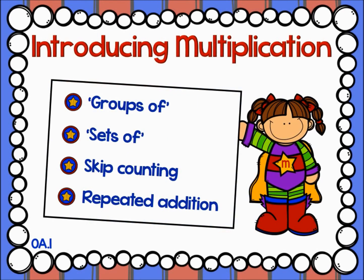When introducing multiplication, be sure to connect it to what students already know. Explain that it is a way to represent repeated addition when we are working with groups or sets of objects. When we solve multiplication or repeated addition problems, we can use skip counting. When recording multiplication equations, be sure to read the multiplication sign as 'groups of' or 'sets of.' Instead of saying '4 times 5,' say '4 groups of 5.' This will be especially useful when students get into 4th and 5th grade working with fractions — they will say '1 half of a group of 5' instead of '1 half times 5.' Later in the year, we will start working with using multiplication to solve area problems, and you can read the problem as a '4 by 5 area.'